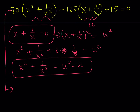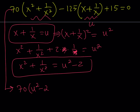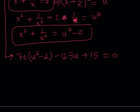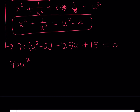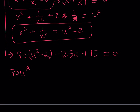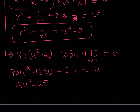We made a substitution and can now use that in our equation. Substituting everything gives us 70 times (u² minus 2) minus 125u plus 15 equals 0. This simplifies to 70u² minus 125u minus 140 plus 15 equals 0, giving 70u² minus 125u minus 125 equals 0. Dividing everything by 5 gives 14u² minus 25u minus 25 equals 0.